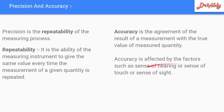Accuracy is affected by factors including sense of hearing, sense of touch, and sense of sight. For example, in length measurement, if we position the instrument at 90 degrees, the measurement will differ from positioning it at 45 or 30 degrees. So sense of sight, hearing, and touch all influence the accuracy of measurement.